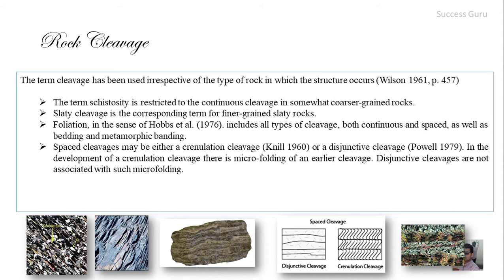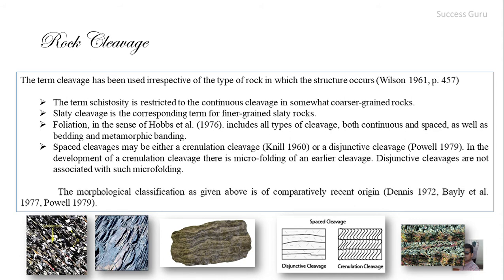Spaced cleavage may be either crenulation cleavage, according to Knell 1960, or disjunctive cleavage, according to Powell 1979. In crenulation cleavage, there is micro-folding of an earlier cleavage — a previously straight cleavage has been crenulated due to secondary disturbance. Disjunctive cleavage is not associated with such micro-folding; the mineral orientation is somewhat parallel. This morphological classification originated around 1972 with Dennis and Powell.